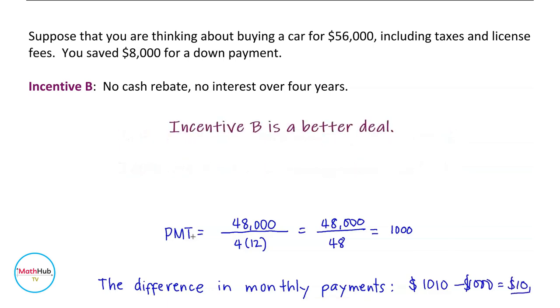Therefore, Incentive B is the better deal because it has lower monthly payments.